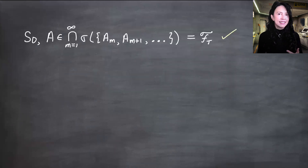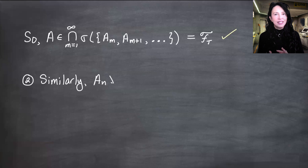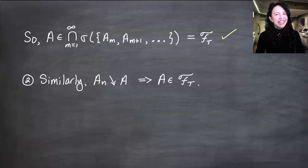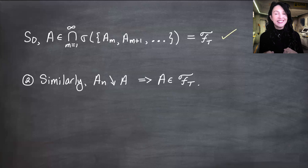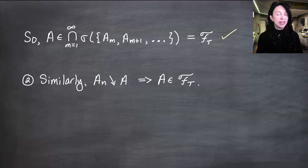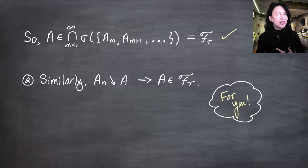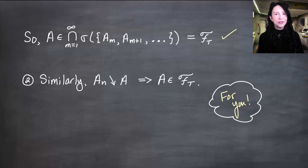For my second example, I'm going to leave this one to you. If we have a collection of sets A_n that are decreasing to a set A, then I claim that A is in the tail sigma field generated by those sets. It is very similar to what we just did and very quick and easy to show.